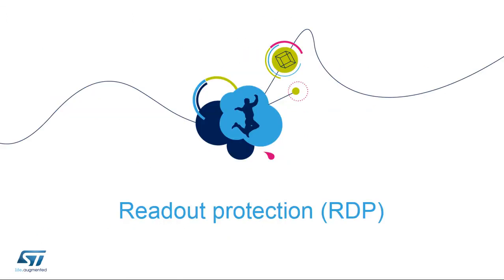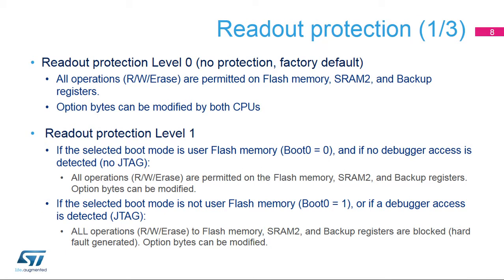Let's take a closer look at the details of the readout protection feature. The STM32WB readout protection feature offers three levels of protection for all SRAM2 and flash memory, as well as the backup registers. Level 0 means no protection — this is the factory default. Read, write, and erase operations are permitted in the SRAM2 and flash memory, as well as the backup registers.